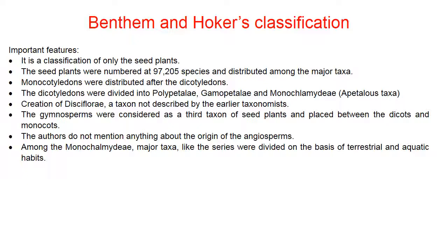One important classification in botany is Bentham and Hooker's classification, which is often asked in competitive exams. The important features are: it classifies only seed plants. The seed plants were numbered as 97,205 species distributed among major taxa. Monocotyledons were placed after dicots.